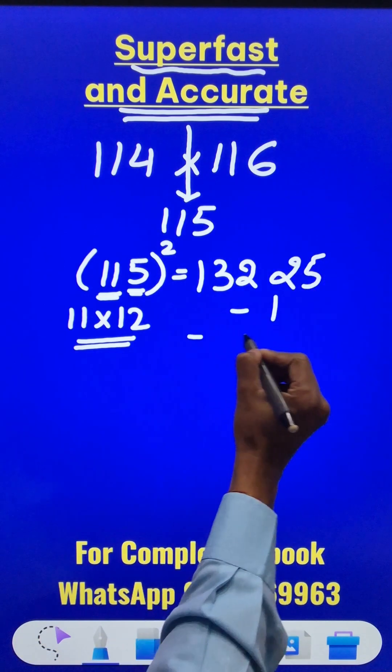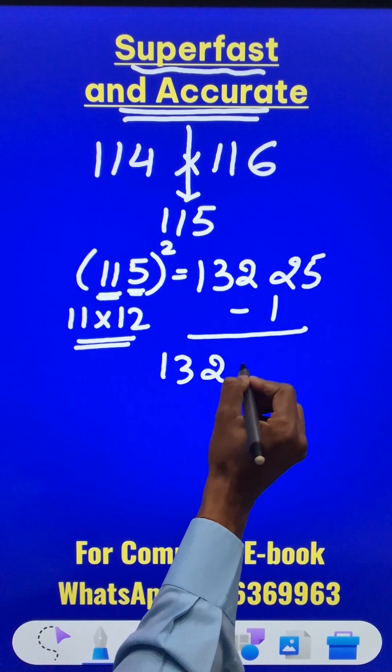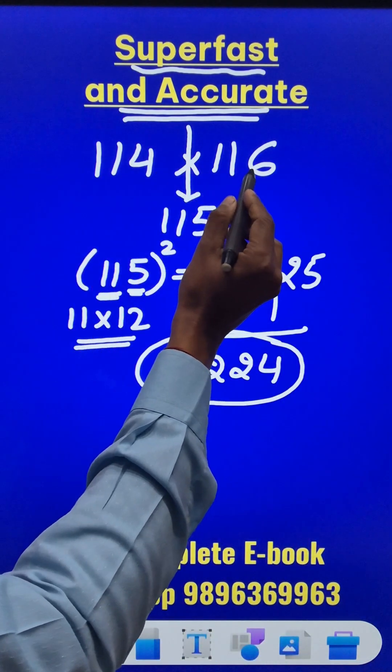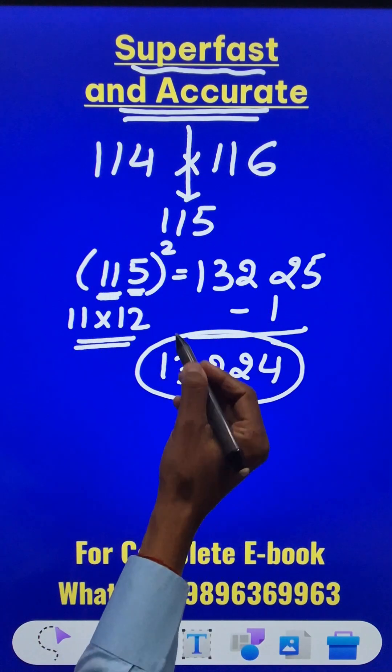Just subtract 1 from this result. You will get 13224. Pick up the calculator and check your answer: 114 times 116. Is it 13224? You will be surprised.